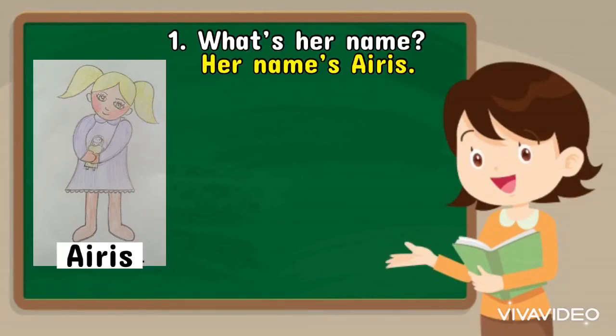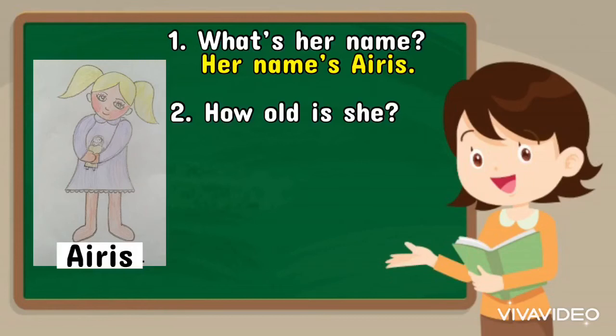How old is she? Berapakah umur dia? She's 7. Dia berumur 7 tahun.